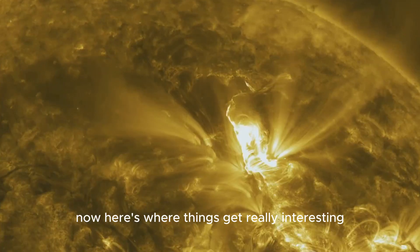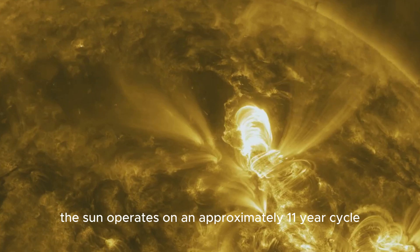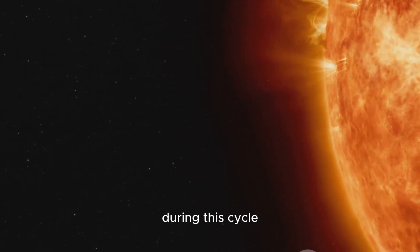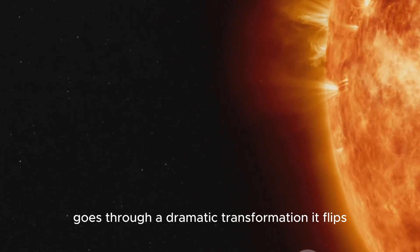Now, here's where things get really interesting. The sun operates on an approximately 11-year cycle known as the solar cycle. During this cycle, the sun's magnetic field goes through a dramatic transformation. It flips.